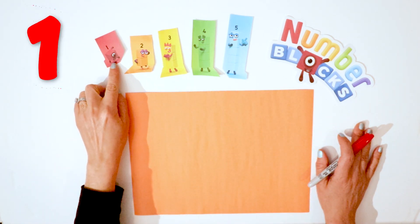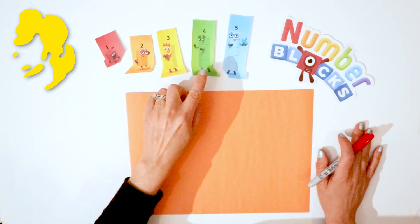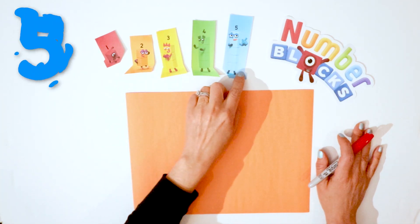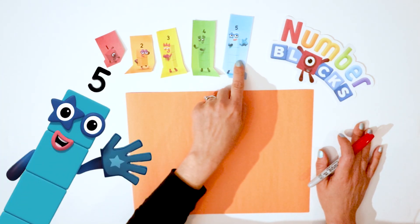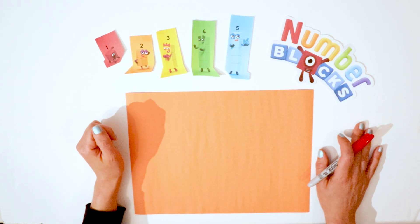I have with me blocks one through five. Here's number one, two, three, four, and five. Number five is my favorite because blue is my favorite color. What's your favorite color?